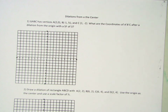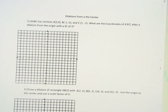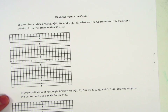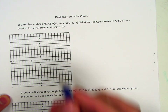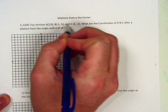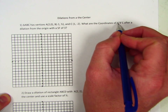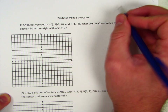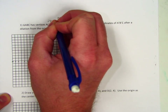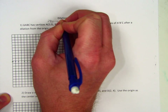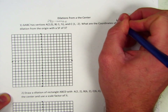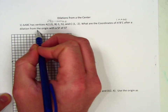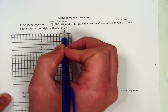Here's my first video on dilations. We're going to learn how to dilate figures from the origin, or from the center of the coordinate plane. In this first situation, triangle ABC has vertices A, B, and C. We need to find the new coordinates — the image — after a dilation from the origin with a scale factor of three.